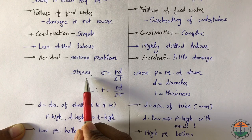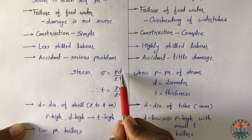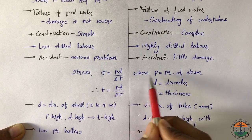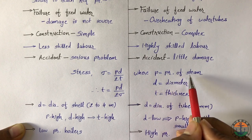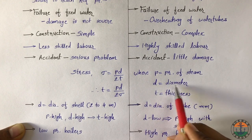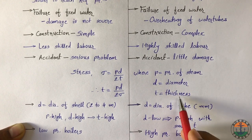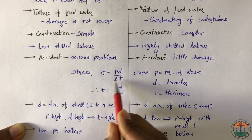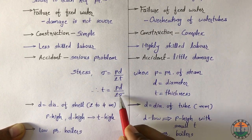Stress for any boiler is calculated as sigma equal to PD by 2T, where P is the pressure of steam, D is the diameter, T is the thickness. Now thickness is calculated as PD by 2 sigma.